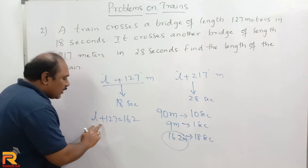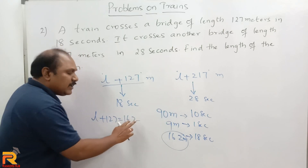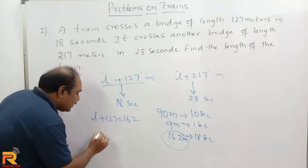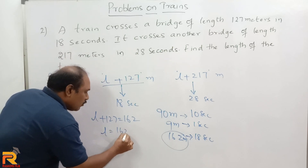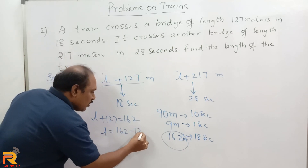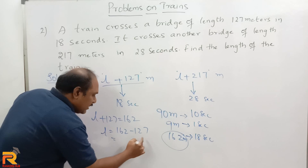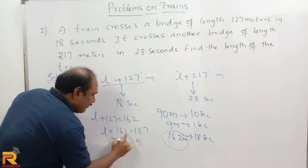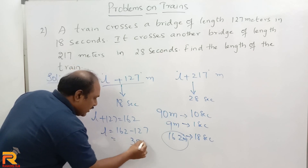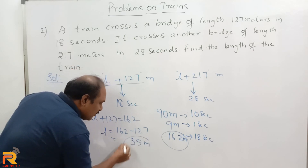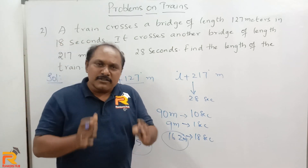So L plus 127 should be equal to 162. Therefore L equals 162 minus 127. 162 minus 127: 2 minus 7, borrow to get 12 minus 7 equals 5, and 5 minus 2 equals 3. So L equals 35 meters. The length of the train is 35 meters.